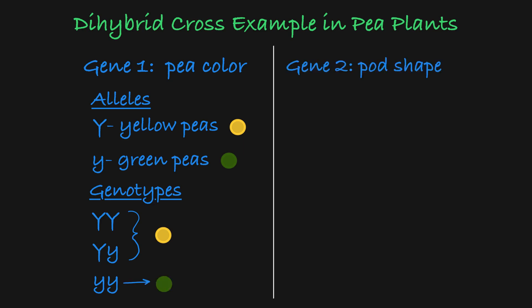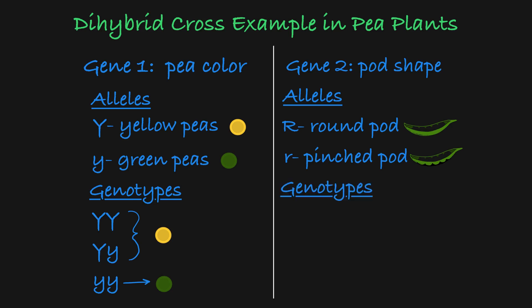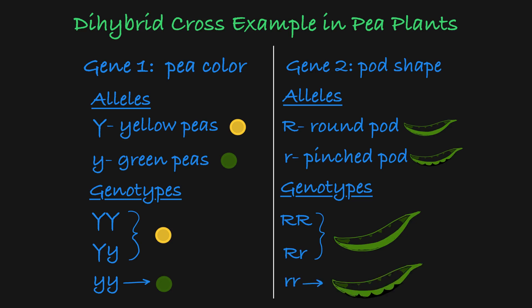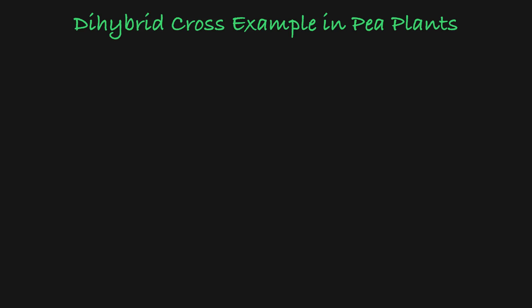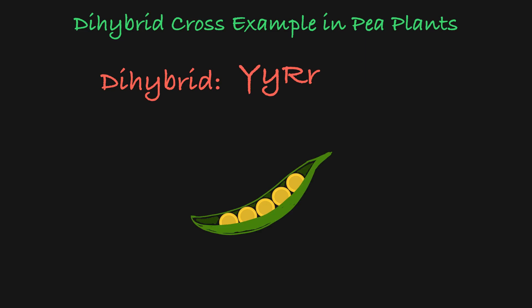The second gene we look at confers pod shape. The gene has two alleles: a dominant allele that results in a round pod shape, and a recessive allele that results in a pinched pod shape. So the homozygous dominant and heterozygous genotypes result in a round pod, and the homozygous recessive genotype results in pinched pods. In this case, both parents have the heterozygous genotype, and therefore they will have yellow peas and round pods.